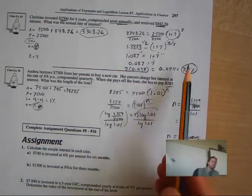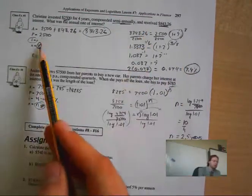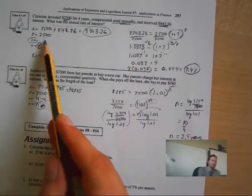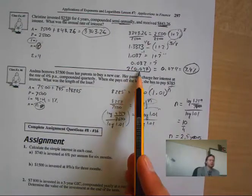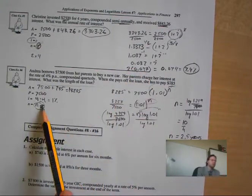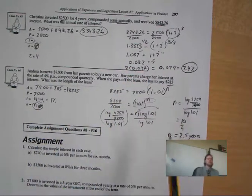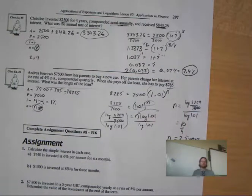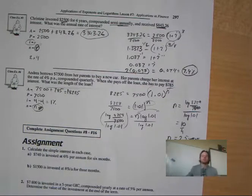So whereas for the interest rate we multiply by the number of compounding periods to get the annual rate, here for time we divide to get the actual number of years. The answer is 2.5 years. I hope you understood this and have good questions tomorrow as we work on this assignment together. See you tomorrow.